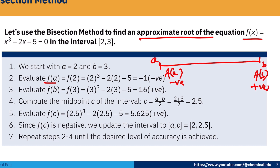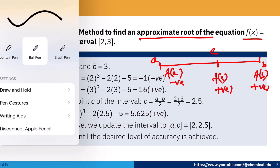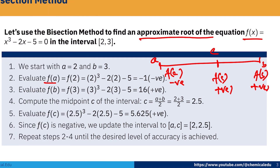Now we find the midpoint c. c = (a + b) / 2 = (2 + 3) / 2 = 2.5. Now we find f(c): f(2.5) = 2.5³ - 2×2.5 - 5, which is positive. Since f(c) is positive and f(a) is negative, they have opposite signs, so the root lies between a and c.